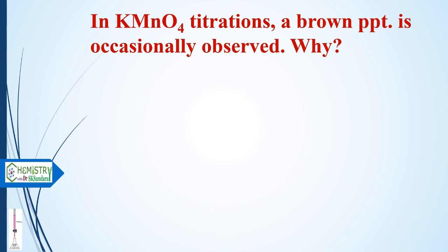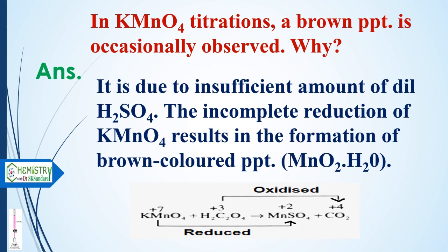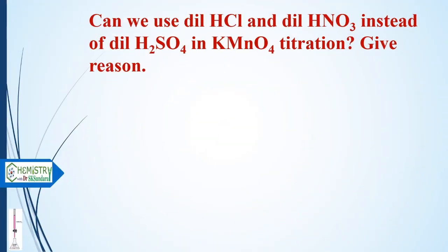Why is a brown precipitate occasionally observed in permanganometric titrations? This is due to an insufficient amount of dilute sulfuric acid. The incomplete reduction of potassium permanganate results in the formation of manganese dioxide, which is a brown precipitate.